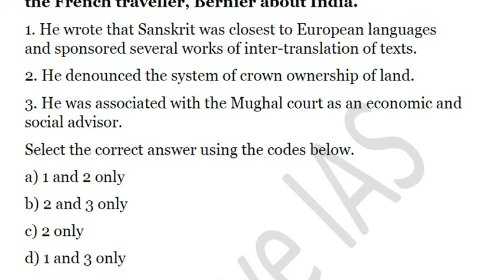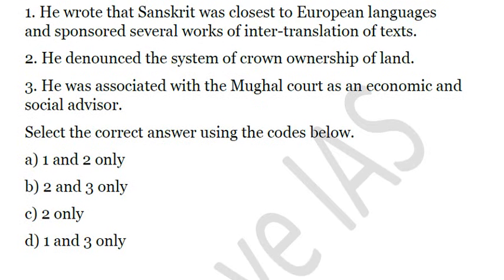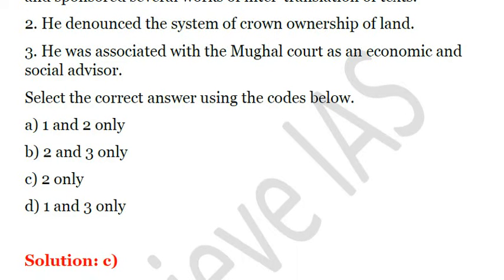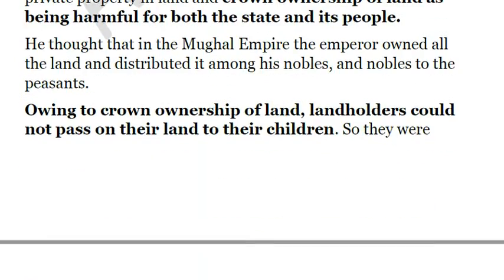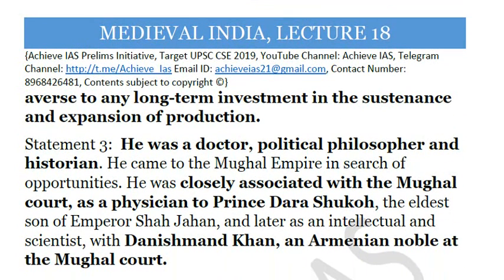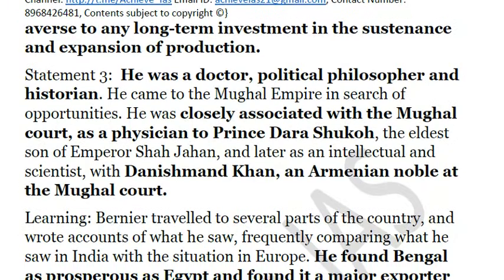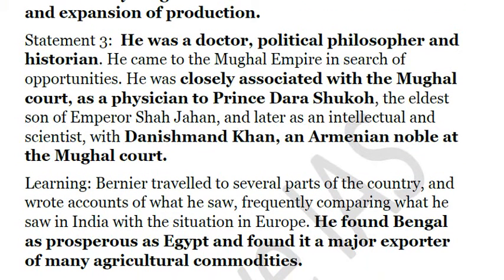Bernier found that the main hindrance in this system was there was no motivation for the cultivator to invest in the land, because land would not necessarily pass from parent to child. That is why he denounced crown ownership of land as it hindered investment. The third statement is incorrect because Bernier was associated with the Mughal court, but not as an economic and social advisor — rather he was a doctor and expert in physiological studies, a political philosopher, historian, and physician to Prince Dara Shukoh, the eldest son of Emperor Shah Jahan. He later worked with Danishmand Khan, an Armenian noble at the Mughal court. He also found Bengal to be as prosperous as Egypt and a major exporter of many agricultural commodities.